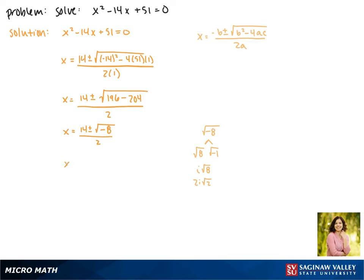Plugging this back into our equation, we get x equals 14 plus or minus 2i times the square root of 2, all divided by 2.